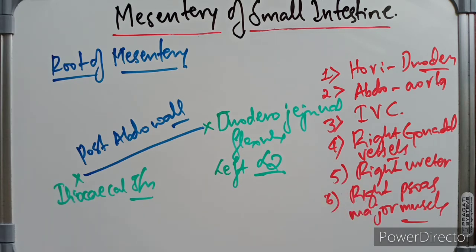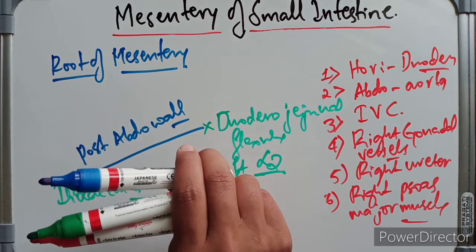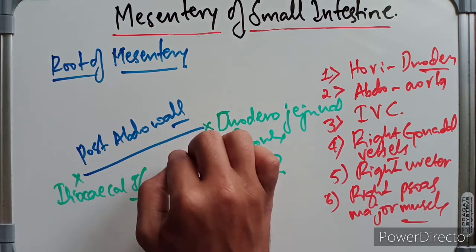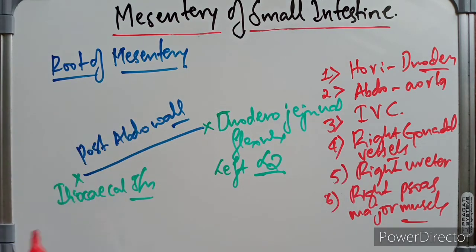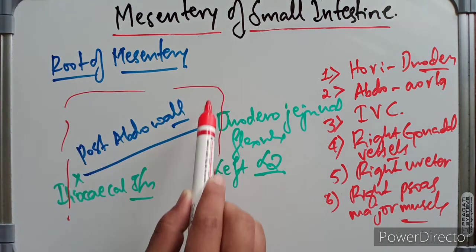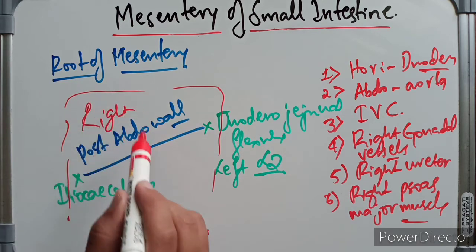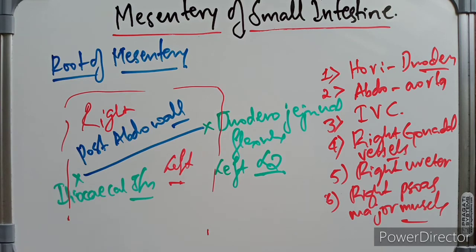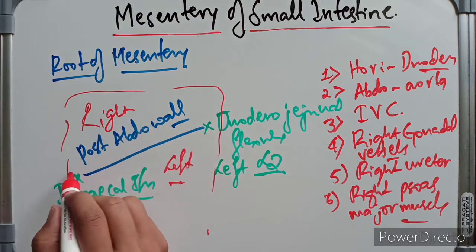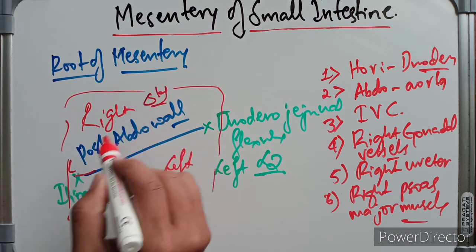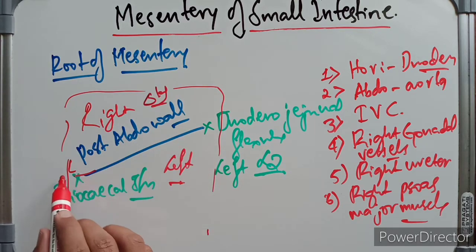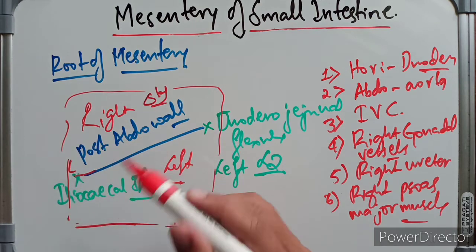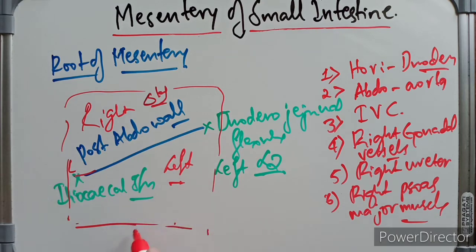The root of the mesentery divides the infracolic compartment into two parts — the right and the left. The right part is small, triangular in nature, and terminates in the right iliac fossa. The left part is larger, quadrangular in nature, and passes without interruption into the true pelvis.